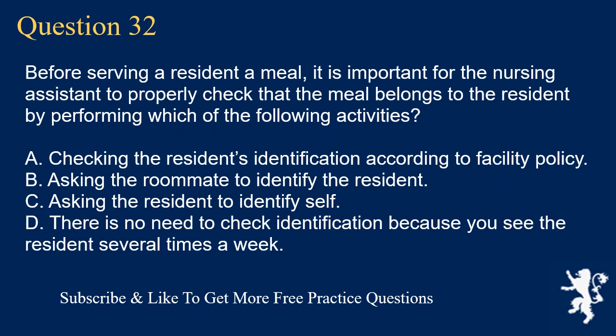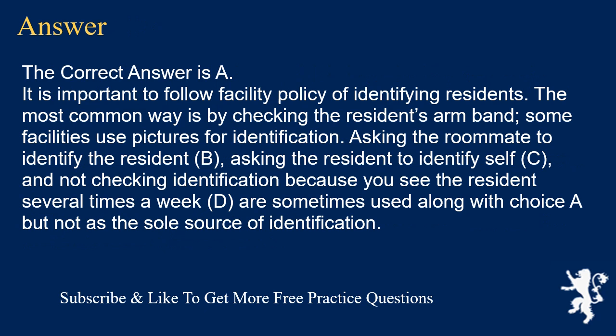Question 32. Before serving a resident a meal, it is important for the nursing assistant to properly check that the meal belongs to the resident by performing which of the following? A. Checking the resident's identification according to facility policy. B. Asking the roommate to identify the resident. C. Asking the resident to identify self. D. There is no need to check identification because you see the resident several times a week. The correct answer is A. It is important to follow facility policy of identifying residents. The most common way is by checking the resident's armband; some facilities use pictures. Options B, C, and D are sometimes used along with choice A but not as the sole source of identification.